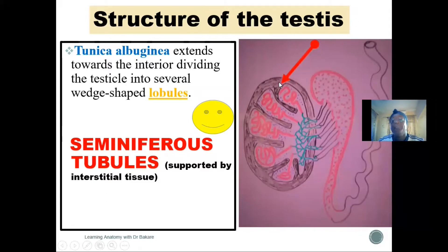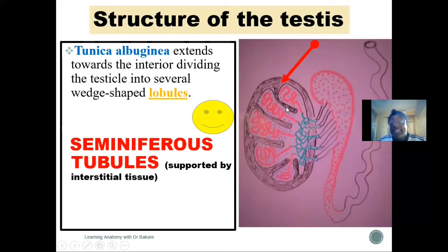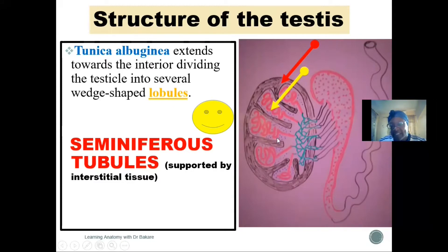You have the tunica albuginea highlighted in black, and you can see it drives into the tissue of the testes, dividing it into wedge-shaped lobular structures called the testicular lobules. The lobules are arranged from one end to the other, and within the lobules we have a tubular configuration called the seminiferous tubules.